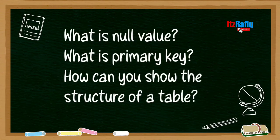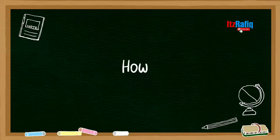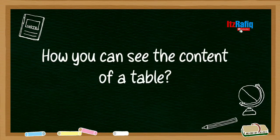Then what do you mean by null value? The undefined or unknown value is known as null value. What is primary key? The unique key of a table is known as primary key. And which command is used to show the structure of a table? DESC table name. How can you see the content of a table? You will say select star from table name.